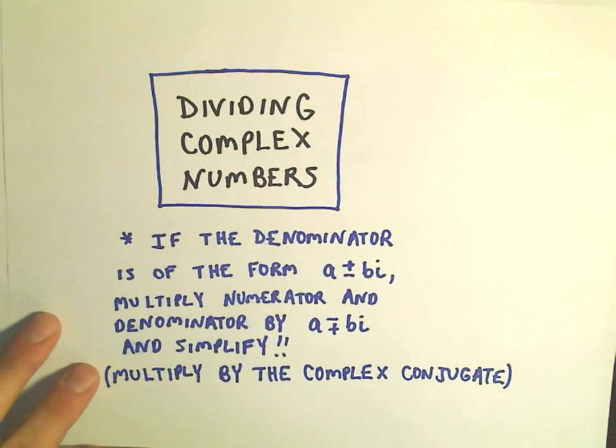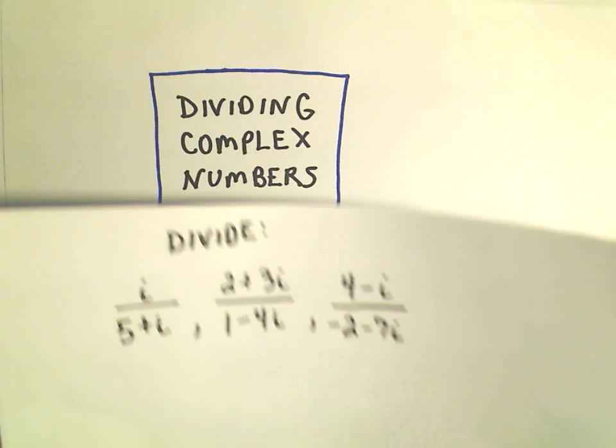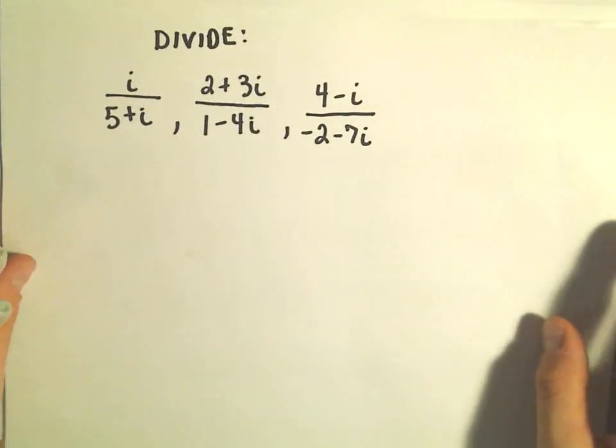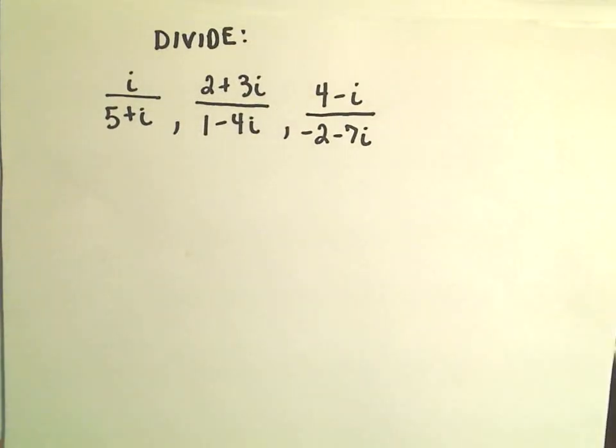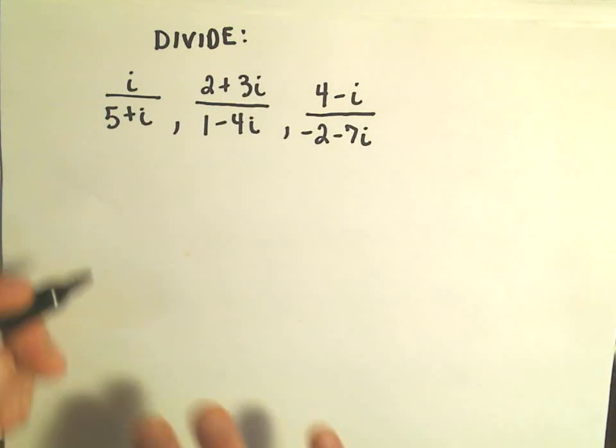So that's really the main idea in all these problems, nothing worse than that. We've got three examples here: i over 5 plus i, 2 plus 3i over 1 minus 4i, and 4 minus i over negative 2 minus 7i. Let's just take them here in order.